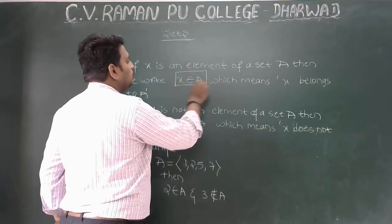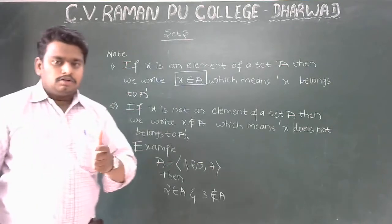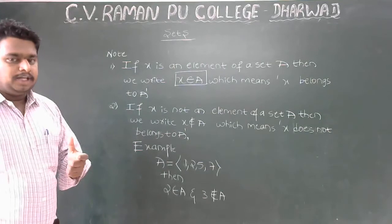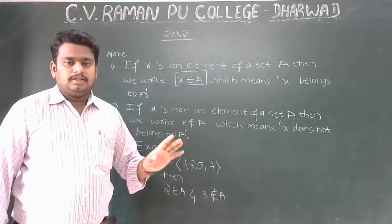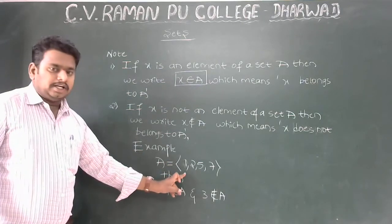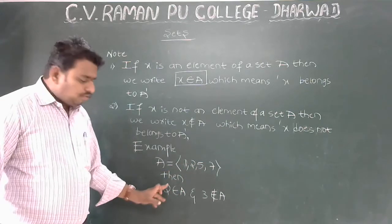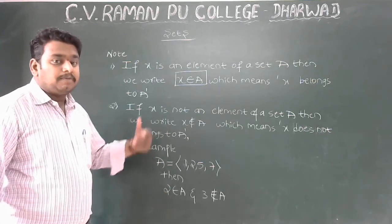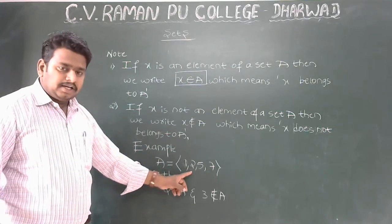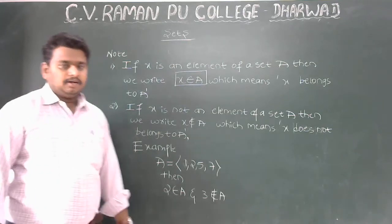For example, if the set A = {1, 2, 5, 7}, then 2 is an element of set A. That is, 2 belongs to A. We write this symbolically as 2 ∈ A.